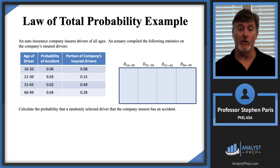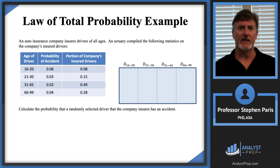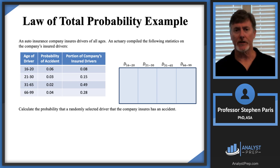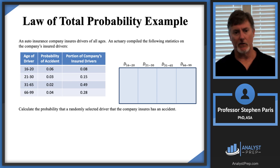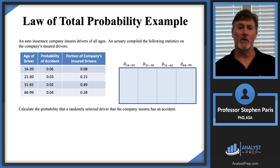Those four categories form a partition of the sample space. I'm using capital D with a subscript representing the drivers in each age group. Now I need to decide how many people to start with. Since the probabilities are given to two decimal places and I'll be multiplying them together, I'm going to use 10,000 as my starting point.